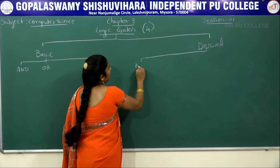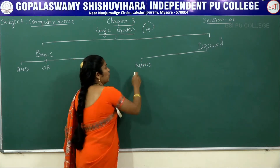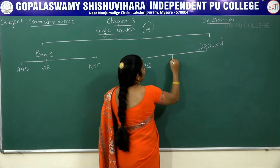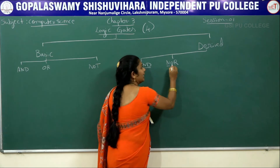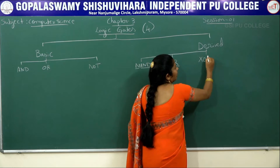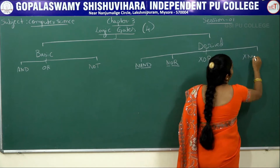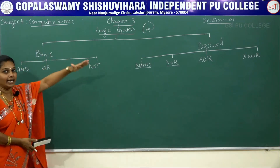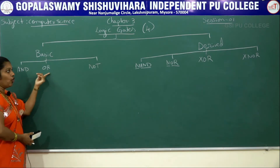In the derived gates also we will get several types. The first one is NAND gate — NAND gate is a combination of NOT gate and AND gate. The next one is NOR gate — it is a combination of NOT gate and OR gate. Next one is XOR gate, and the last one is XNOR gate. These are the derived gates.